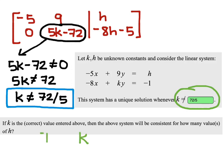So, in other words, if k is equal to 72 over 5, what does h have to be in order for the system to be consistent?